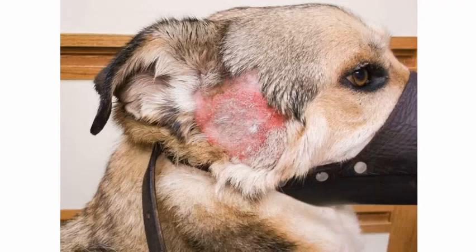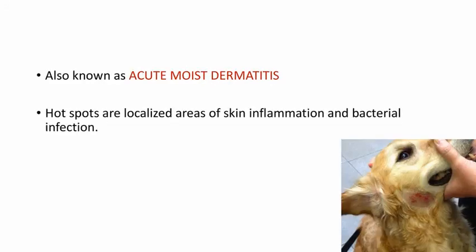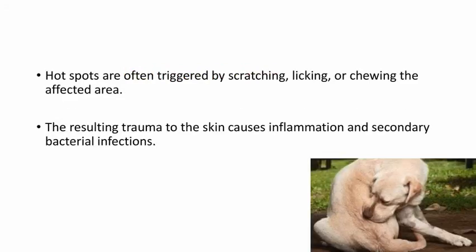Next coming to hot spots. This is the picture of a hot spot on the face of a dog. They are most commonly seen in summer months and are painful, oozing sores that appear seemingly out of nowhere, happening very suddenly and spreading rapidly. Also known as acute moist dermatitis, they are localized areas of skin inflammation and bacterial infection, often triggered by scratching, licking, or chewing the affected area, causing inflammation and secondary bacterial infections.